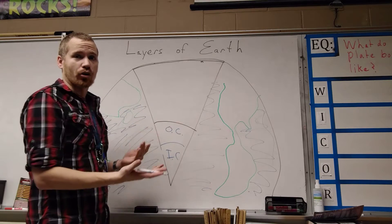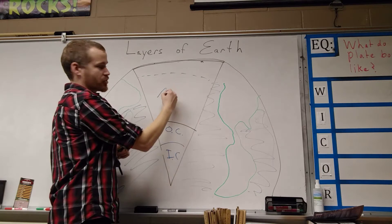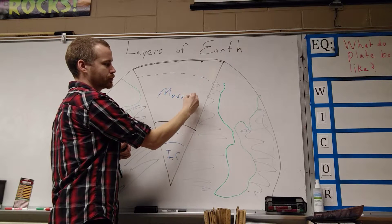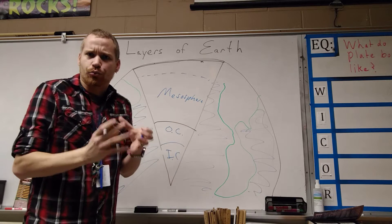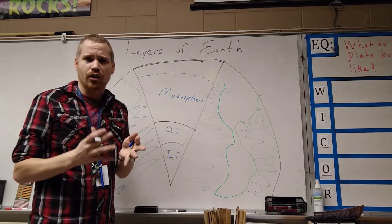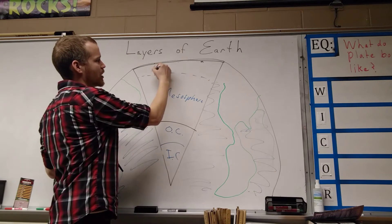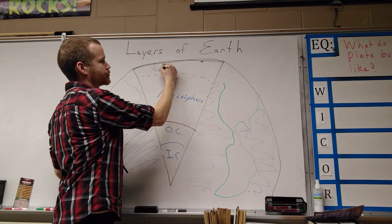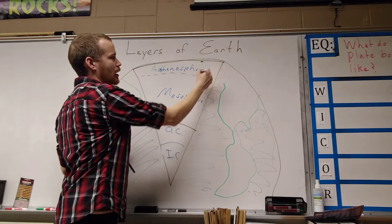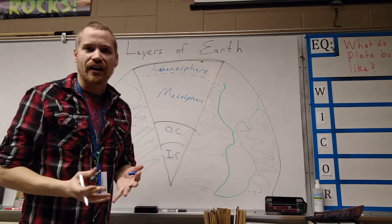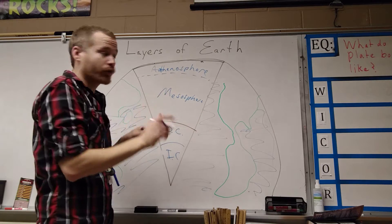The mantle is broken up into a couple of different layers. We have the mesosphere, which is actually solid and rigid — we tend to use the term brittle. It's under a lot of pressure, so it holds into a solid. Then we have our asthenosphere, which has plastic behavior — it tends to flow and ooze kind of like silly putty, so it can move around.